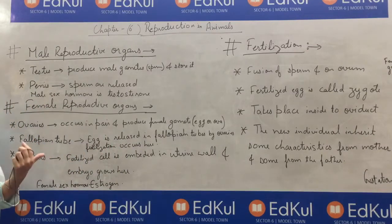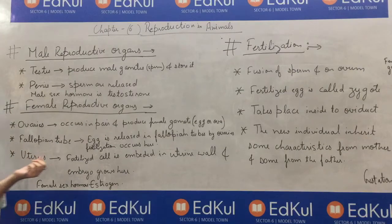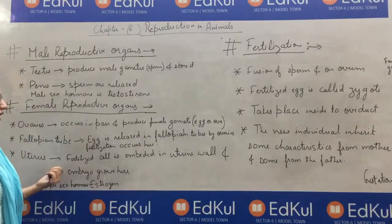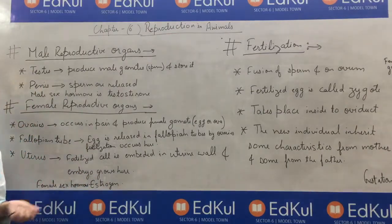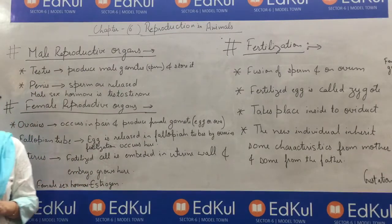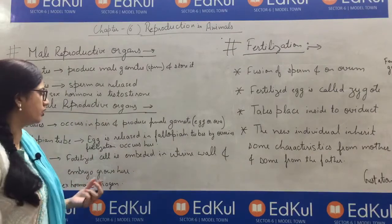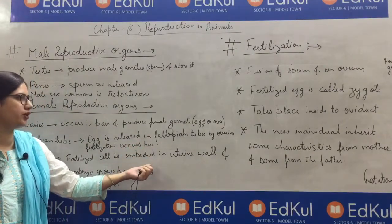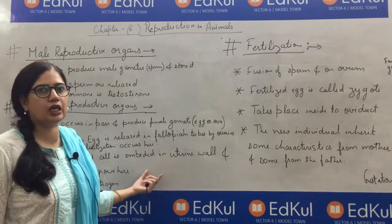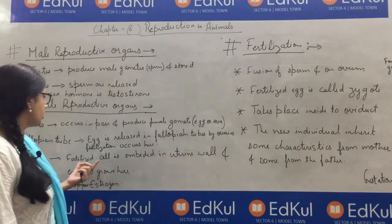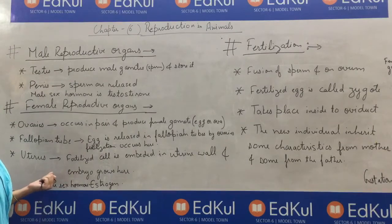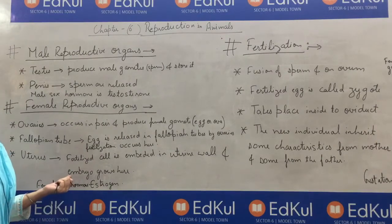Now the uterus — you can see it in the diagram. Once the egg is fertilized, the fertilized cell is embedded in the uterus. It moves to the uterus from the fallopian tube and remains in the uterus for the next 9 months. That period is known as the gestation period.